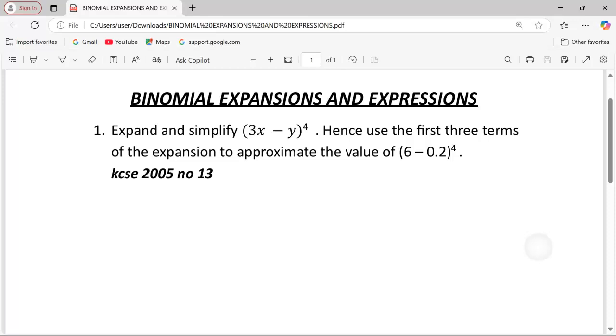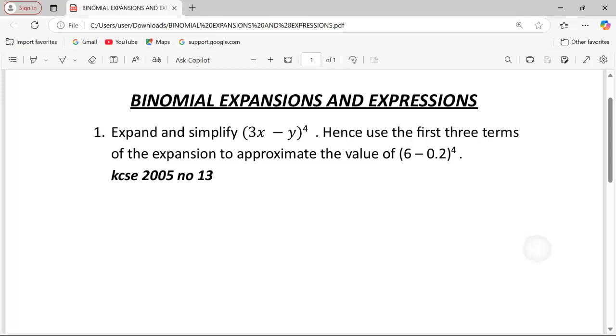Number one: expand and simplify (3x - y) raised to power 4. Hence, use the first three terms of the expansion to approximate the value of (6 - 0.2) raised to power 4. This is a question from KCSE 2005, paper 2 mathematics, number 13.